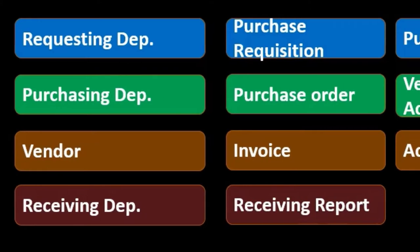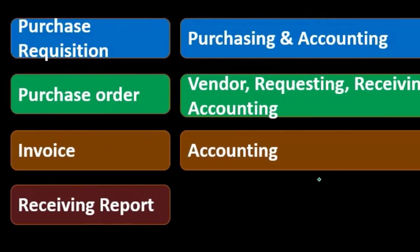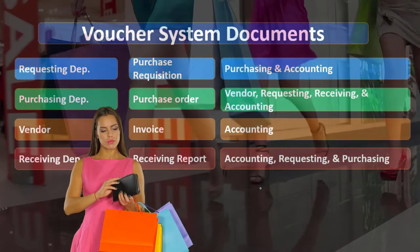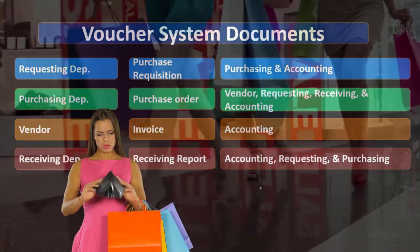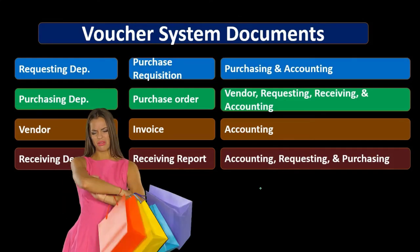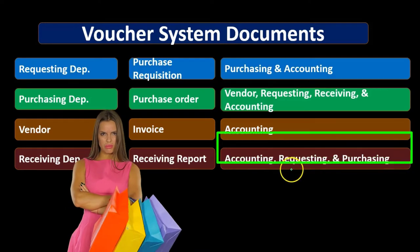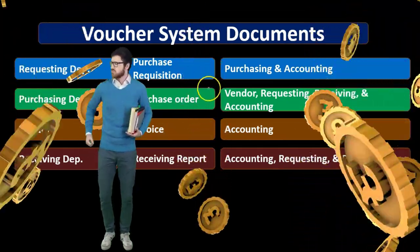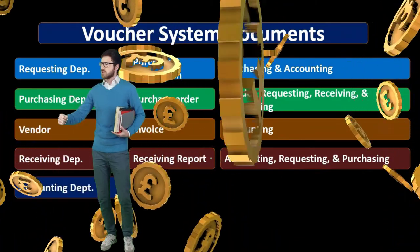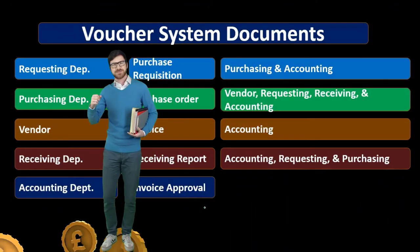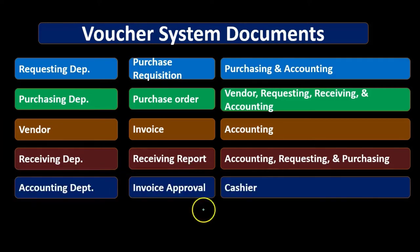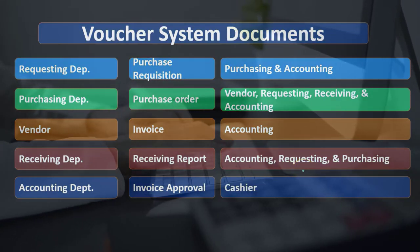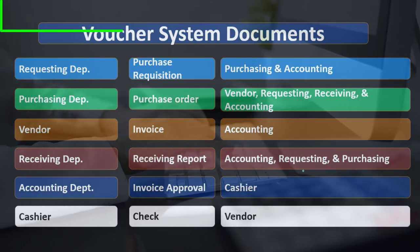The receiving report confirms that whatever item was ordered has arrived — the truck came in and we got what we ordered. The receiving report goes to the accounting department, the requesting department, and the purchasing department. At this point, the accounting department has the purchase requisition, the purchase order, the invoice, and the receiving report. The accounting department then completes the invoice approval, and finally the cashier receives that information, records it into the system, and writes the check to the vendor.